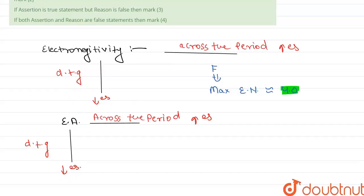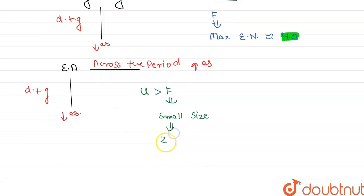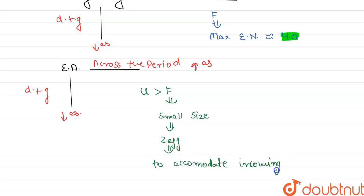Electron affinity has the same trend as electronegativity, so fluorine should have the maximum electron affinity. However, in actuality, chlorine has higher electron affinity than fluorine. The reason is the small size of fluorine — due to excessive effective nuclear charge (Z effective), fluorine does not have extra space to accommodate an incoming electron. Hence the electron affinity of fluorine is lesser than that of chlorine.